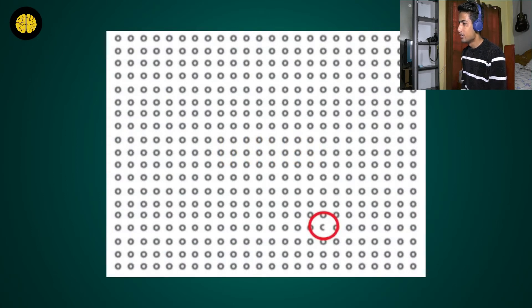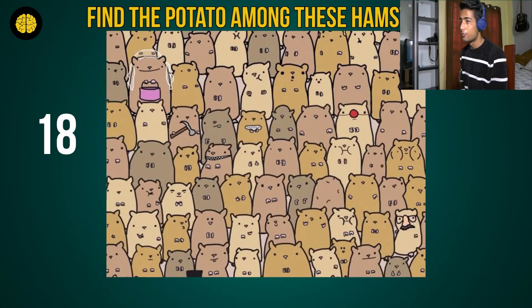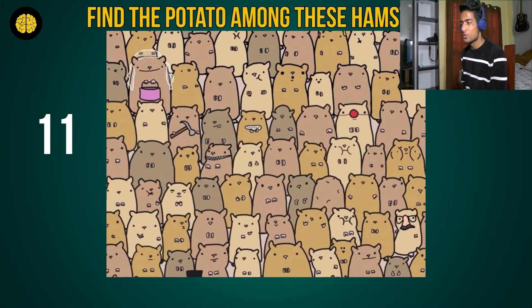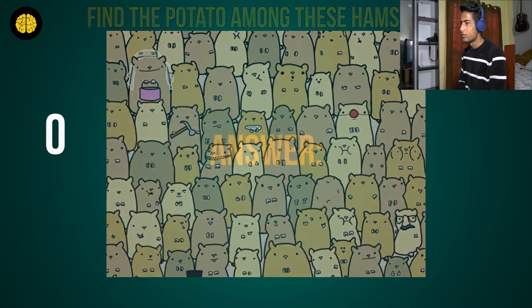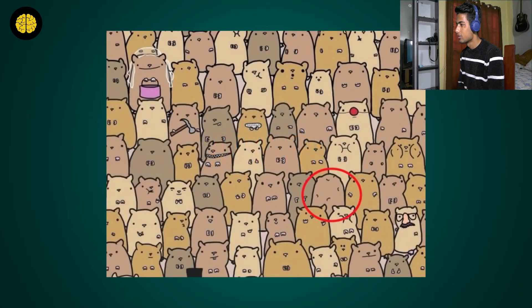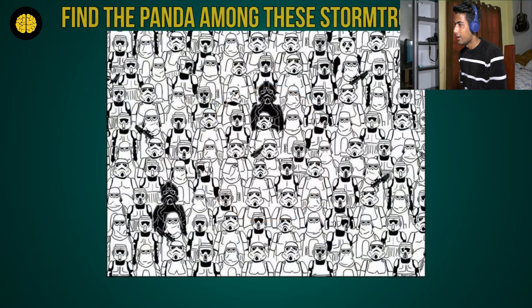Okay, let's go with number nine: find the potato among these hamsters. Yeah, it was easy — I found it quite early, before 20 seconds. This one is easier than those circles. You have 10 seconds. The answer — yes! Yep, I'm right. So were you right, guys? How many did you find? Write in the comments and tell me your score!